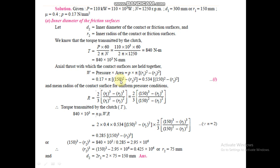Load W = pressure × area, using p and r1 with r2 unknown. For uniform pressure theory, mean radius R = (2/3) × (r1³ − r2³)/(r1² − r2²). Applying T = n·μ·W·R with n = 2 and μ = 0.4, both W and R are expressed in terms of r2. Solving this single equation gives r2 = 75 mm, so the inner diameter is 150 mm.